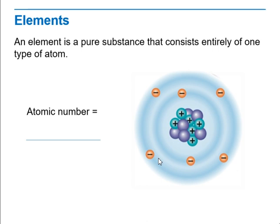Then we have elements. An element is a pure substance that consists entirely of one type of atom. Here we have the atomic number, and if you guys recall the atomic number means the number of electrons which equals the number of protons.